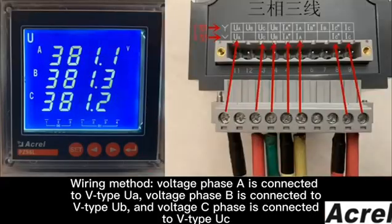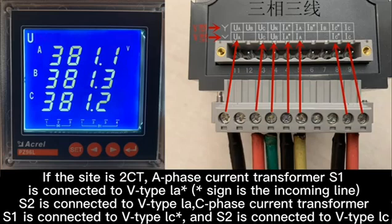Wiring method: Voltage phase A is connected to V-type UA. Voltage phase B is connected to V-type UB. For the S2 CT side connection: